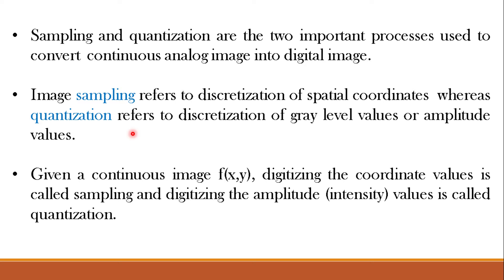Image sampling refers to discretization of spatial coordinates, that is x and y coordinates, whereas quantization refers to discretization of gray level values, intensity values, or amplitude values. Given a continuous image f(x, y), digitizing the coordinate values is called sampling and digitizing the amplitude or intensity values is called quantization. Spatial resolution means the sampling resolution, and intensity resolution means the quantization resolution.